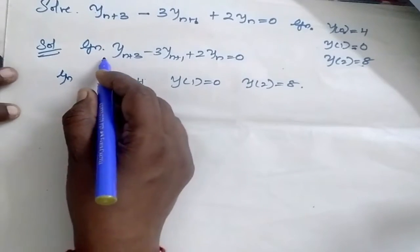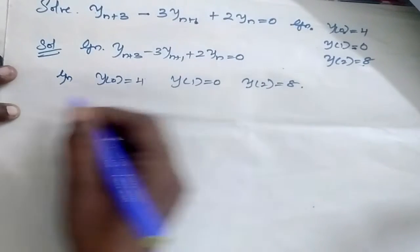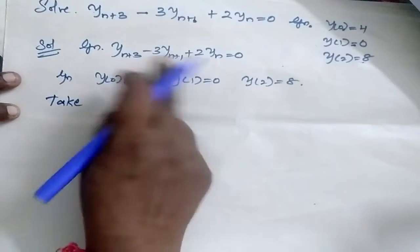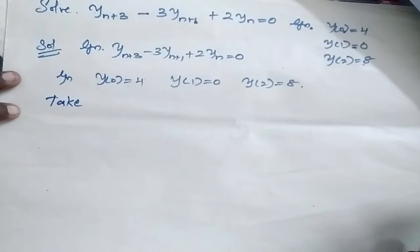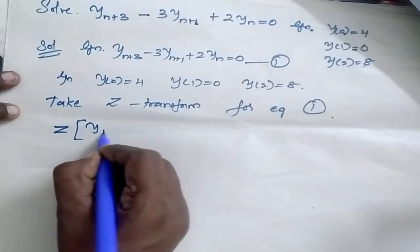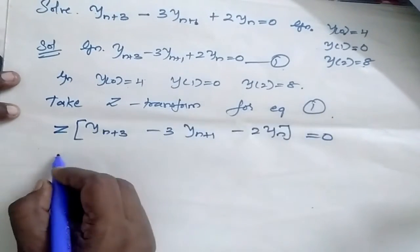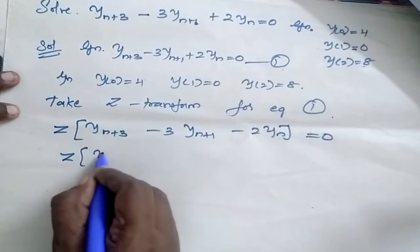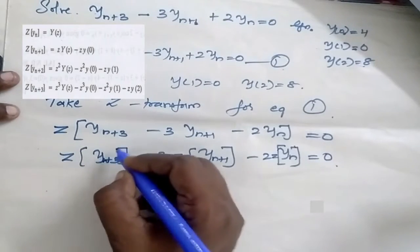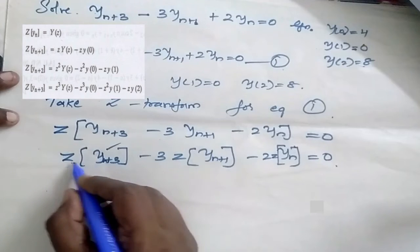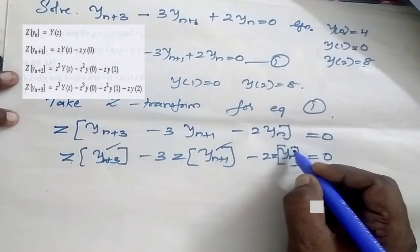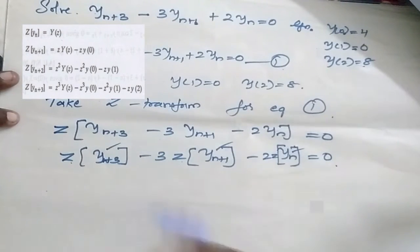Consider this equation — we are going to take the Z-transform of it. On further simplification, I will substitute the formulas for Z of y(n+3), Z of y(n+1), and Z of y(n).